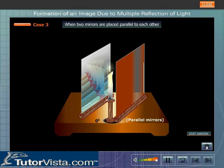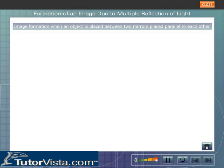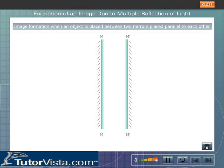When two mirrors are placed parallel to each other, infinite images are formed. In this case, let MM and M'M' be placed parallel to each other, with object O placed in between the mirrors.